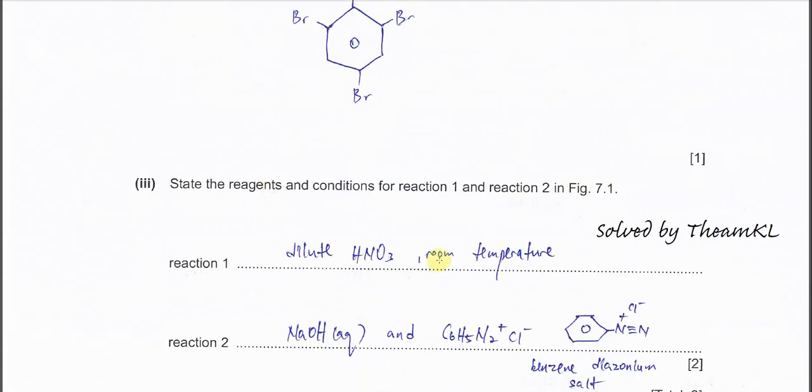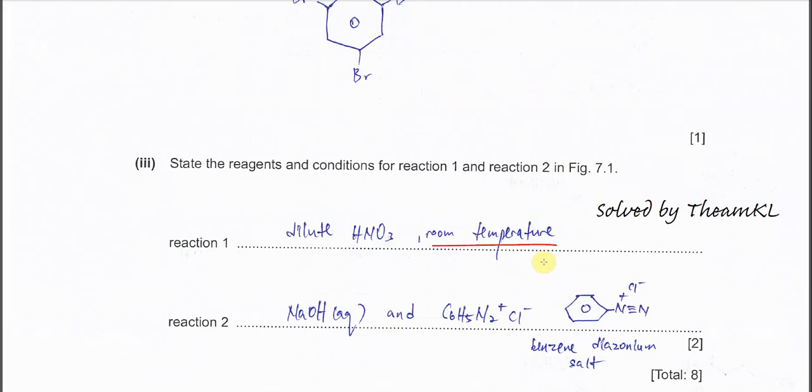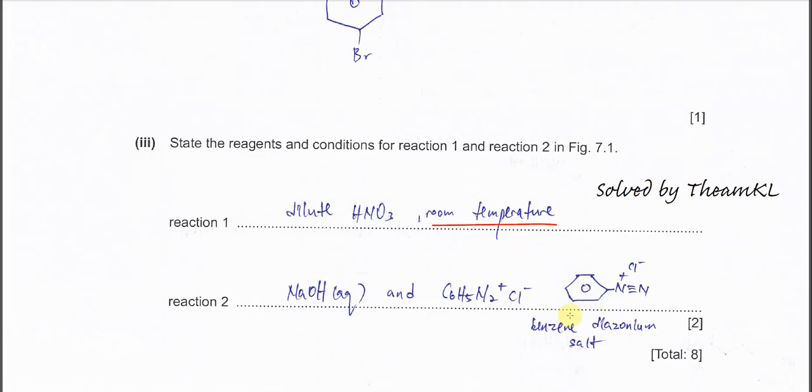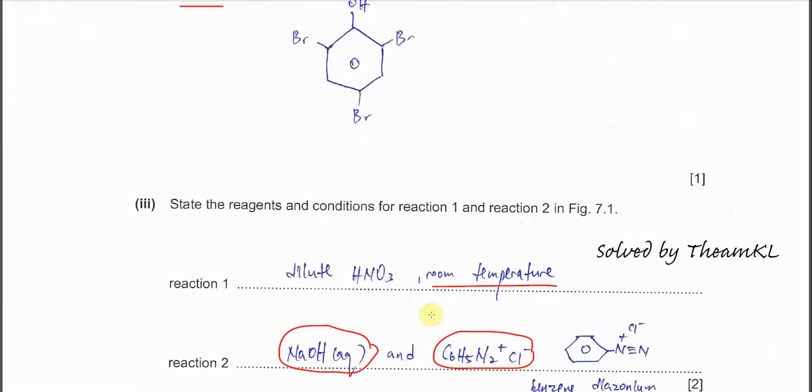Reaction two involves the benzene diazonium salt. You can put this one or you can draw the structure like this: C6H5N2+ Cl-. This is benzene diazonium salt, and it needs sodium hydroxide in alkaline medium. Then if you undergo the coupling reaction with the phenol and benzene diazonium salt, it will form this azo-dye.